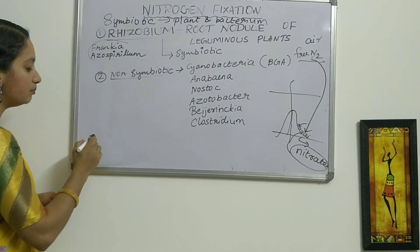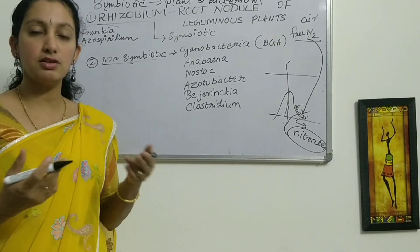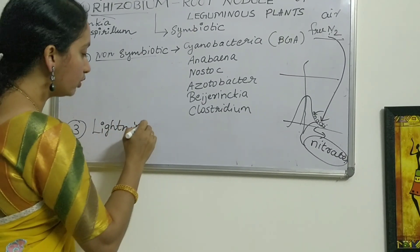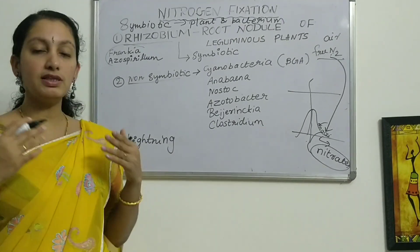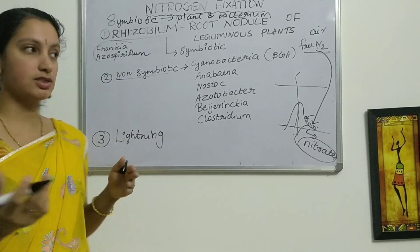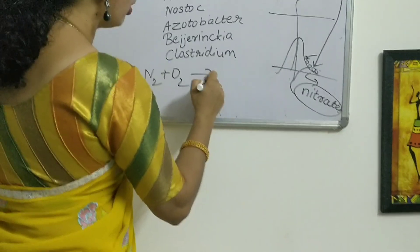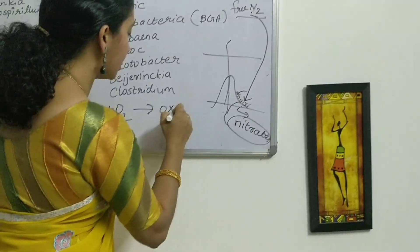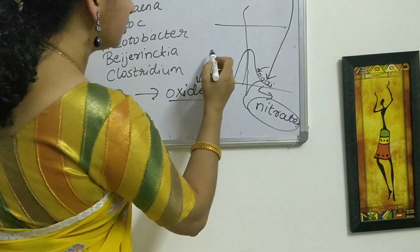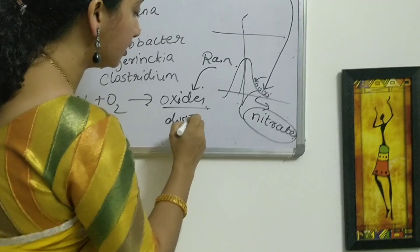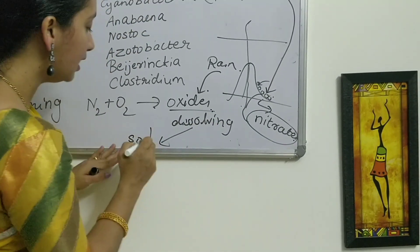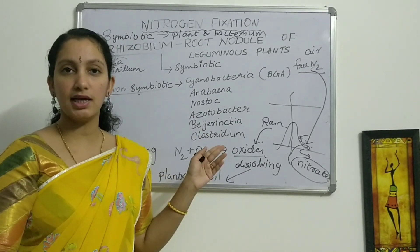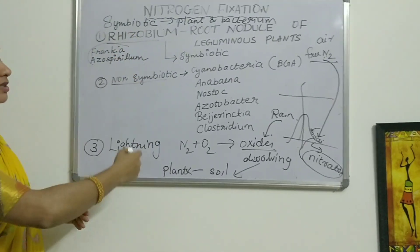There is one more form in which nitrogen is fixed. Free nitrogen is fixed to the soil in the form of nitrates by the process called lightning. During thunderstorms, lightning happens and high temperature is created in the atmosphere, so nitrogen combines with oxygen forming nitrates or its oxides. These oxides dissolve in rain, reach the soil, and become available to the plants. So all the unavailable free nitrogen present in the atmosphere is made available to the plant through these processes.